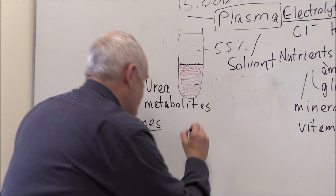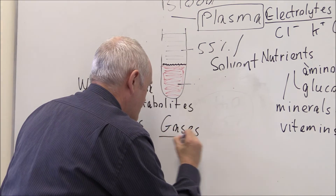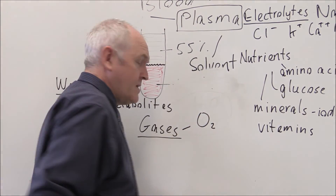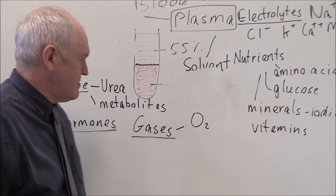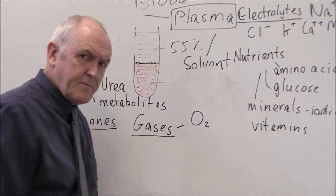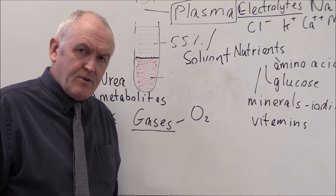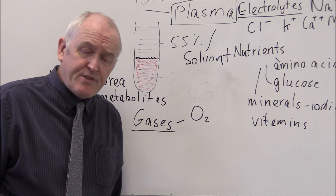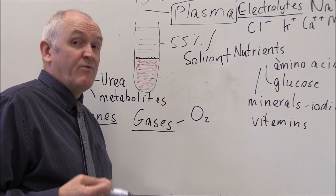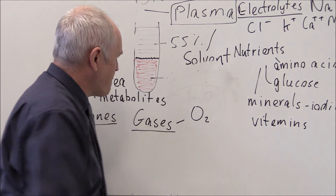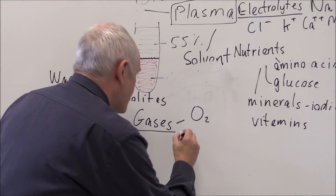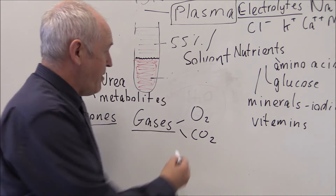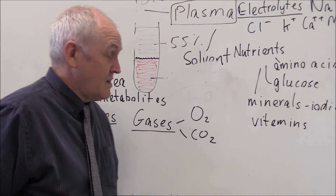There are also gases transported in the plasma. There is some oxygen in the plasma - maybe one percent of the oxygen carried in the blood is transported in solution in the plasma. About 98.5 to 99 percent is actually transported in association with the hemoglobin in the erythrocytes in the form of oxyhemoglobin. There is also some carbon dioxide in solution in the blood, some bicarbonate ions, and small amounts of carbonic acid.